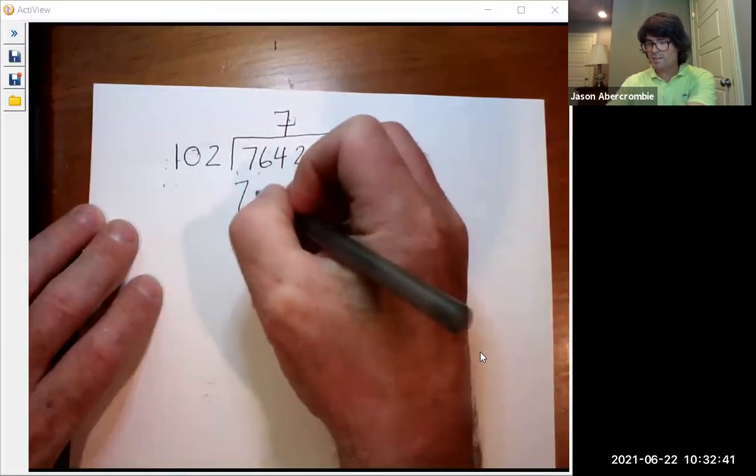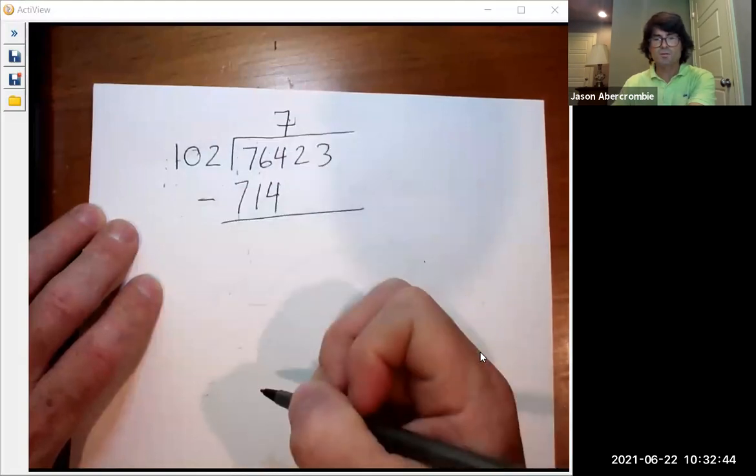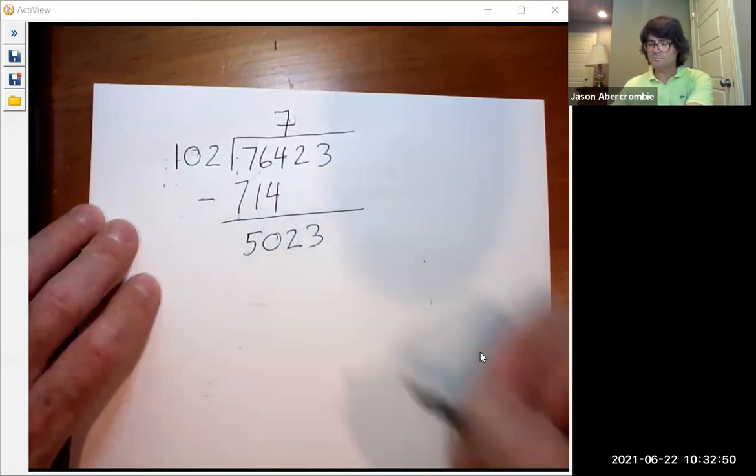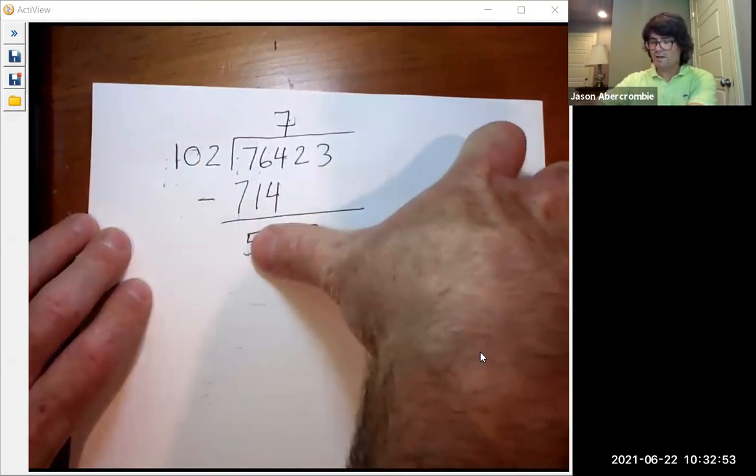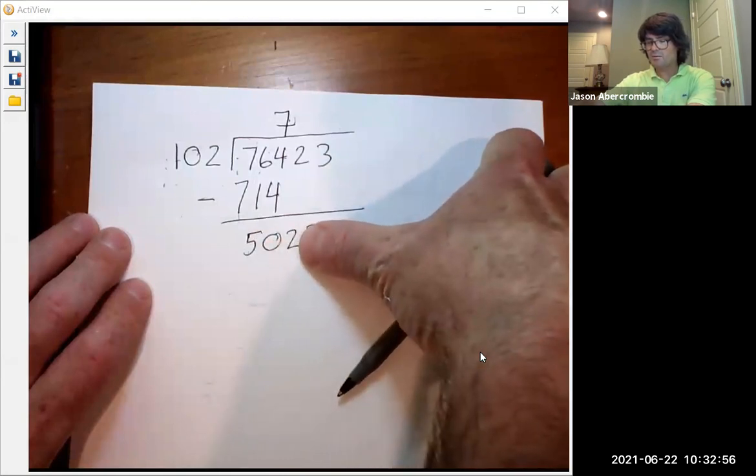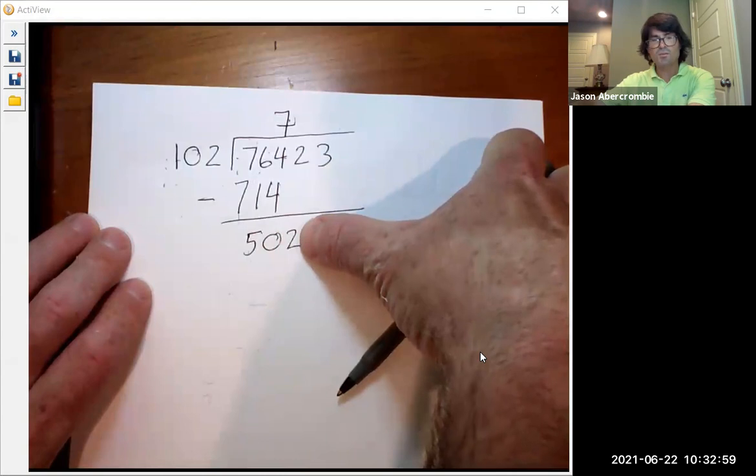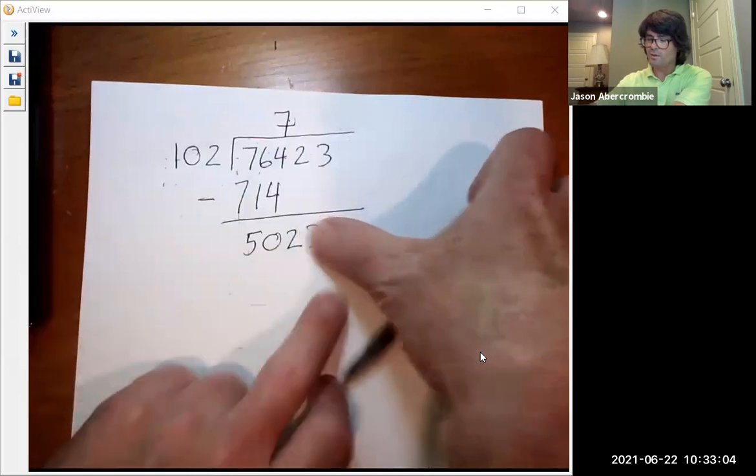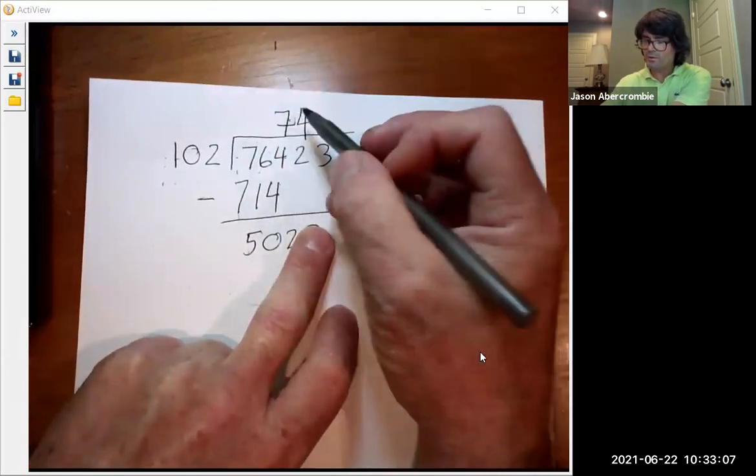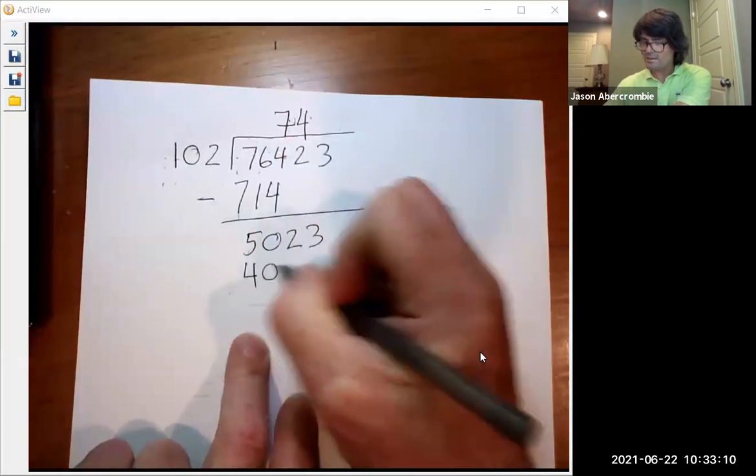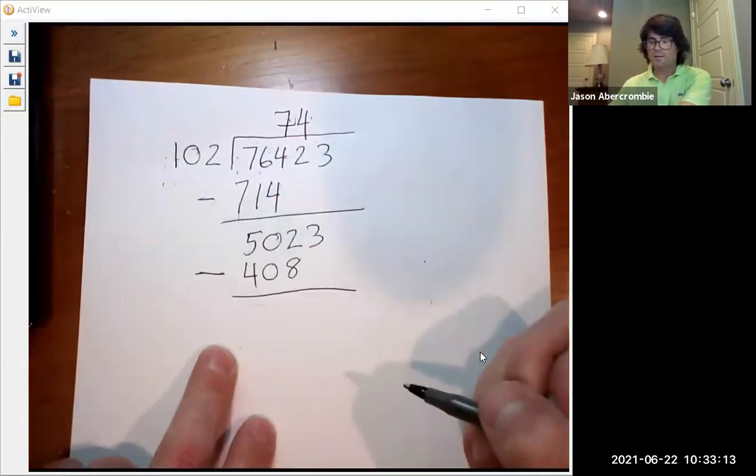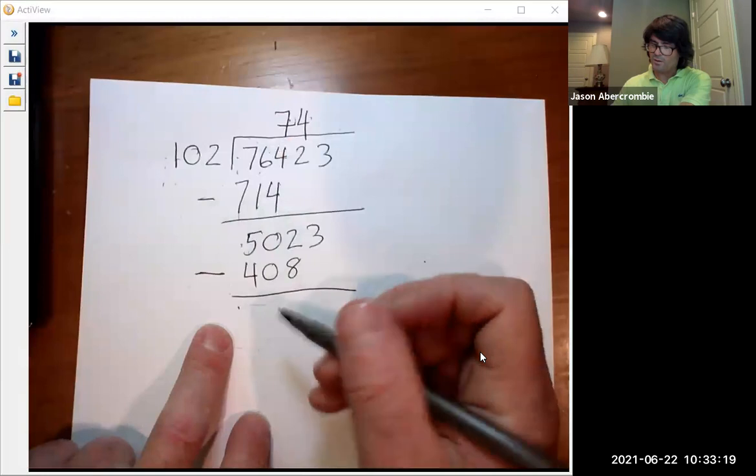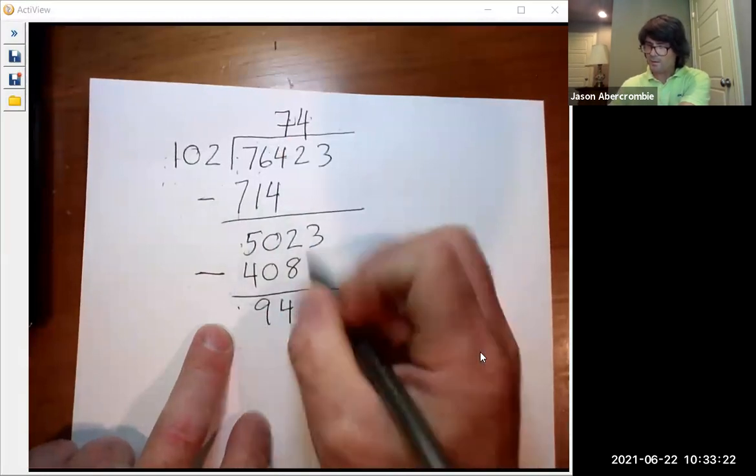Subtract. 764 minus 714 is 5, 0, 2, 3. 102 doesn't go into 5 or 50. And it doesn't even go into 502, because I guess it just goes in four times. So we could just write a 4 right here. 4 times 102 is 408. Subtract. What's 502 minus 408? I guess it would be 94. And then bring down your 3.